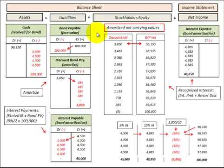In this presentation I'm going to show you how to amortize a bond issued at a discount using the straight-line method of amortization. I have it laid out in T-account form — the asset and liability accounts are shown here as part of the balance sheet, and over on this side is the interest expense recognized each period on that bond, which is part of net income on the income statement.